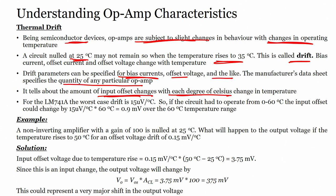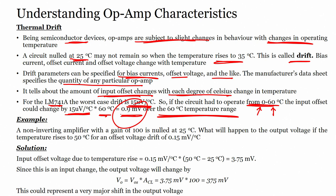For LM741, the worst case drift is 15 microvolts per degree centigrade. If the circuit has to be operated from 0 to 60 degrees, the input could change by 15 microvolts per degree centigrade times 60 degrees, which equals 0.9 millivolts over the 60-degree temperature range. It is very important to understand thermal drift — for a given temperature you are nullifying your output voltage.